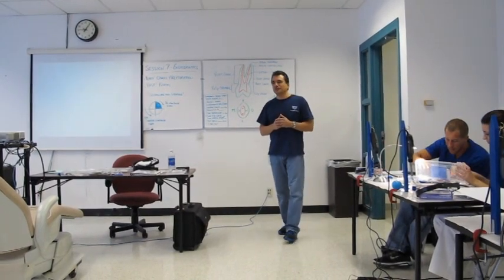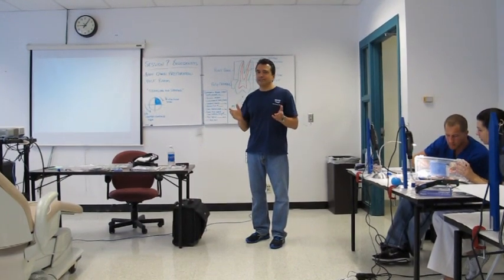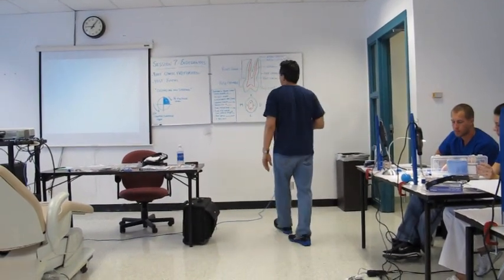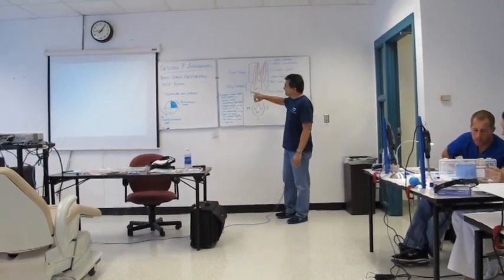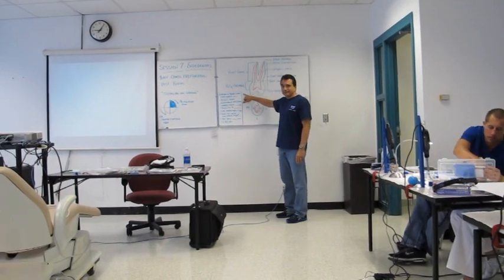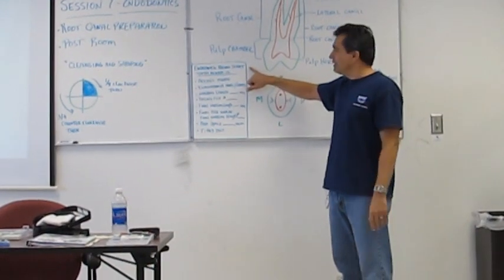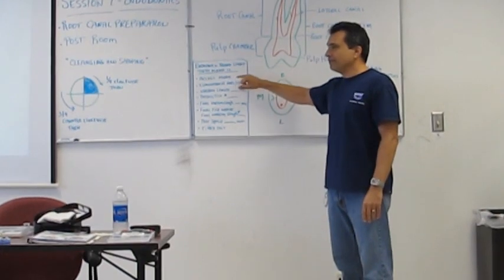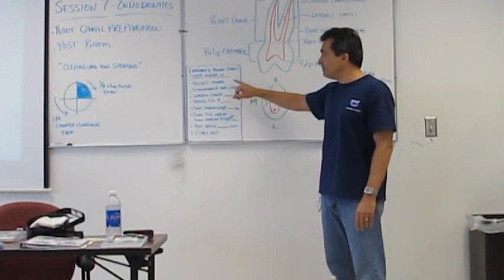Now, each of you has a tooth number 12, which is the bicuspid. And we're going to start making our access in a few minutes. So, everybody have their instruments out? Okay. Well, a few more things before I go and sit down with the microscope. We're going to have a sheet to fill out today. And it's already in with your handouts. Put your name on it. And each one of these steps is going to test your proficiency on how to do your root canal. So, I'm going to need to know some of this information.